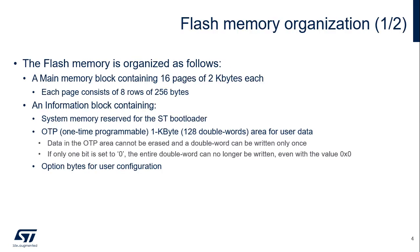In addition to the 32 kilobytes of the main flash memory, the STM32C0 supports a system memory of 6 kilobytes containing the ST bootloader, an OTP memory that can be used to store user data that cannot be erased, and option bytes containing default settings to configure IPs in the system on chip. They are automatically loaded after a power-up reset. The system memory is reserved and contains the bootloader used to reprogram the flash memory through USART1 and I2C1.